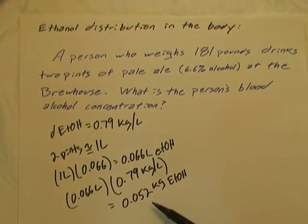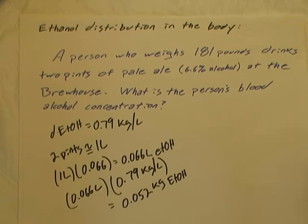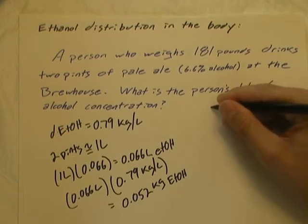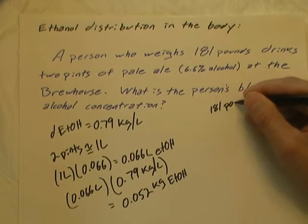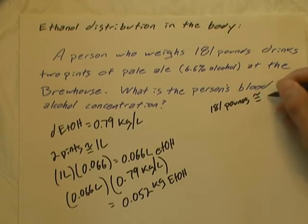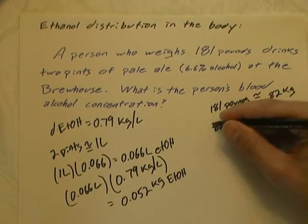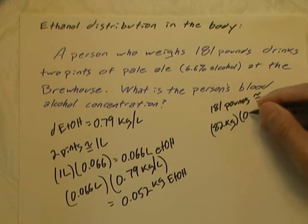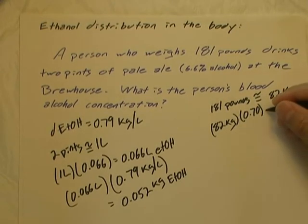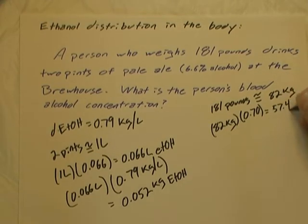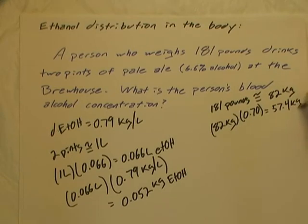This quantity of ethanol is distributed over the person's body mass that is available for ethanol. That is 181 pounds, which is approximately equal to 82 kilograms. 82 kilograms of total body mass times 70% of that body mass, which is available for ethanol, equals 57.4 kilograms.